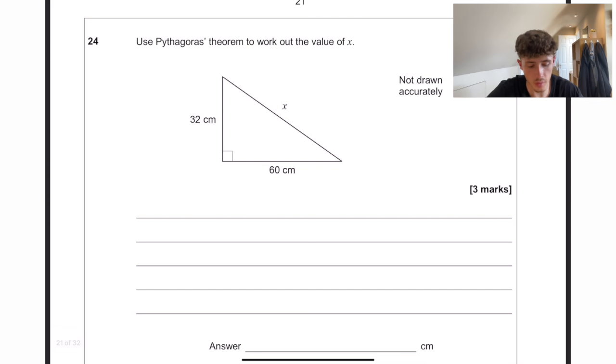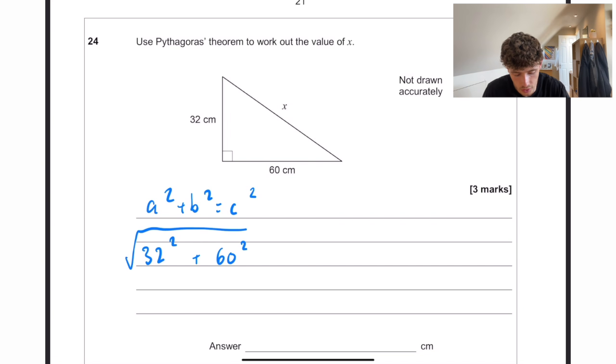Use Pythagoras theorem to work out the value of x. A squared plus B squared equals C squared. And as you're aware, current year 11s, you are given the equation for this. So we are working out the long side so we can keep it as that. We don't need to rearrange. 32 squared. Add 60 squared. And then we square root the whole thing is going to give us C. So if we substitute this in, 32 squared. Add 60 squared. Is going to give us 68 when we square root that.